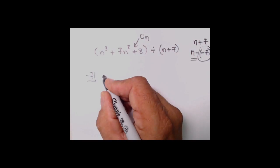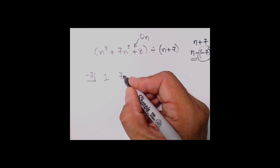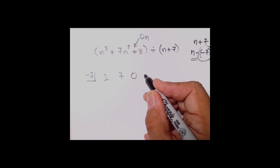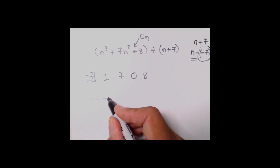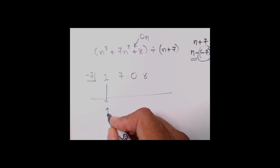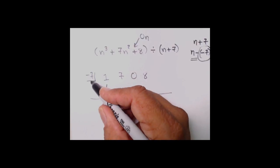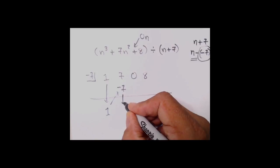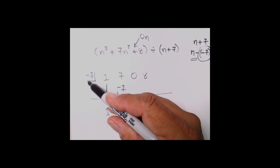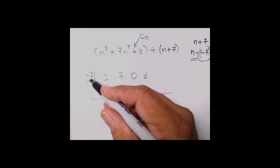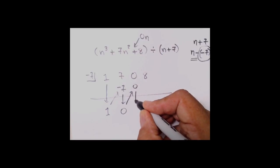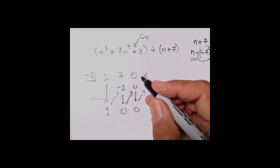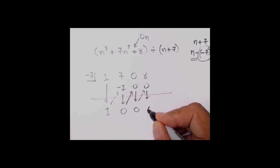The coefficient of the first guy is 1, the second guy is 7. We put in zero for the n to the first power placeholder, and then the plain number on the end is 8. First guy comes straight down. Going up the diagonal, multiply by the guy in the box: 1 times negative 7 is negative 7. Those guys zero out. Zero times negative 7 is zero. Combine coming down, we get zero. And the last time, zero times negative 7 is zero, but we end up with an 8 on the end.